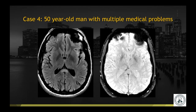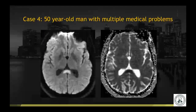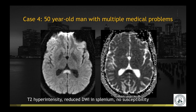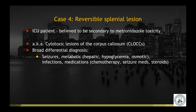Case number four is a 50-year-old man with multiple medical problems. Axial T2 FLAIR, axial susceptibility weighted imaging, axial diffusion, and ADC demonstrate T2 hyperintensity and reduced diffusion in the splenium of the corpus callosum. There is no abnormal susceptibility to suggest hemorrhage. This is a reversible splenial lesion, also called a cytotoxic lesion of the corpus callosum or CLOCC. The differential is broad — it can be seen with seizures, various metabolic disorders including hepatic encephalopathy, hypoglycemia, osmotic demyelination, certain infections, and medications. This patient was in the ICU and the lesion is believed to be secondary to metronidazole toxicity.